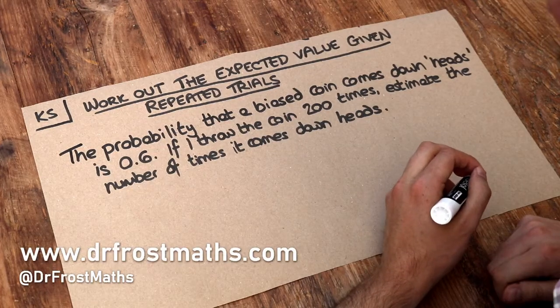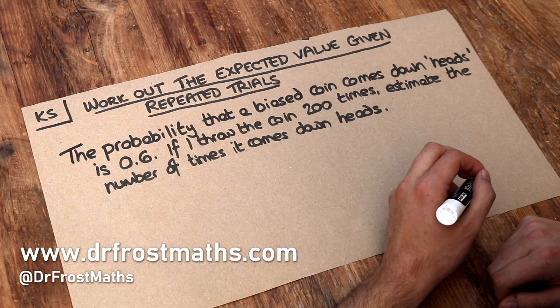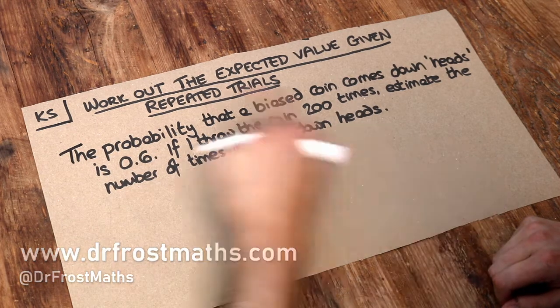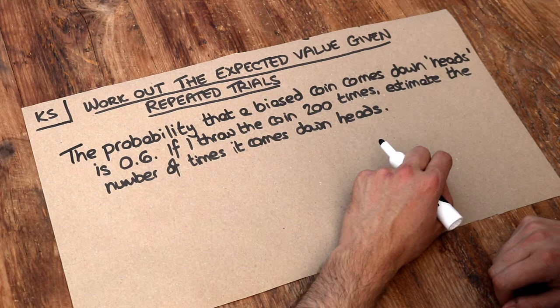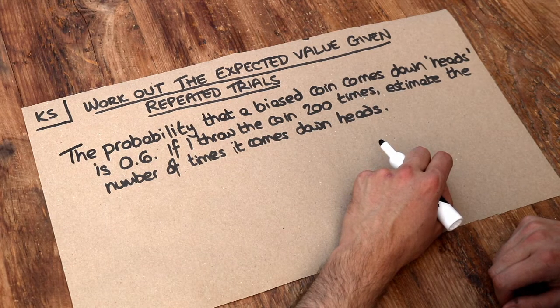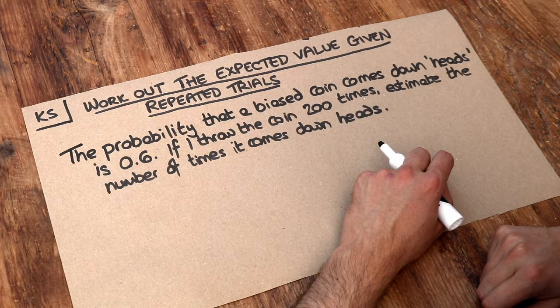Hello and welcome to this Dr Frost Maths key skill video on working out the expected value given repeated trials. We have this problem here. The probability that a biased coin comes down heads is 0.6. If I throw the coin 200 times, estimate the number of times it comes down heads.